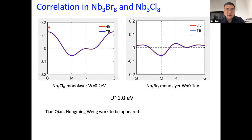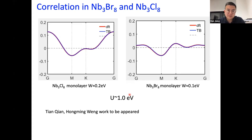The last thing I want to discuss is correlation effects in these materials. Collaborating with my colleagues Tian Chen and Homing Wen, both experimentally and theoretically, we found that this material is not simple. For NbBr3.8, the DFT bandwidth is only about 100 meV, while the Coulomb interaction energy is around 200 meV. The superconducting transition temperature from experiment is on the order of 1 K. This demonstrates that this material may be a strongly correlated material, which could host mechanisms of unconventional superconductivity — and possibly time-reversal symmetry breaking in the superconducting state. That is all for my talk. Thank you for your attention.